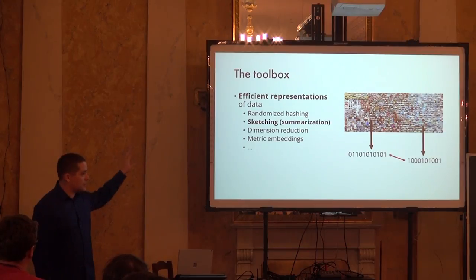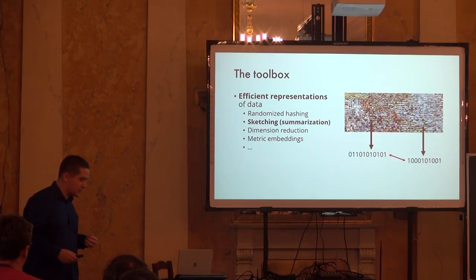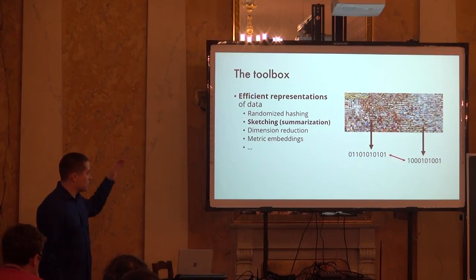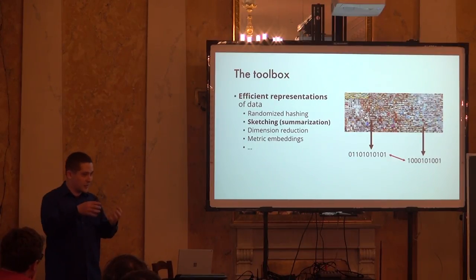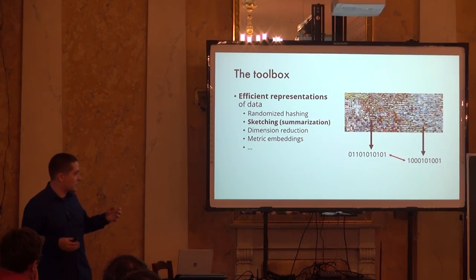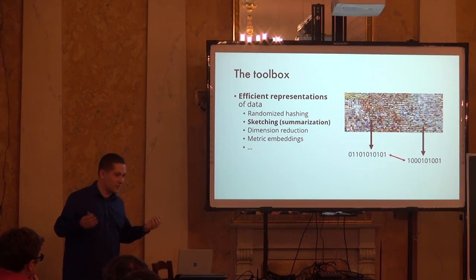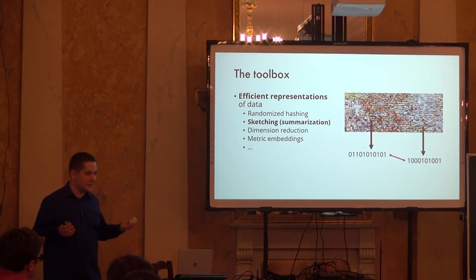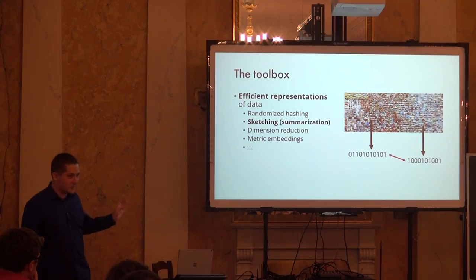The difference between sketching and hashing: at the level I described it, they sound similar. Usually when you think of hashing, you think about exact collisions — when codes exactly collide. Sketching potentially allows more refined estimation procedures: you can compute Hamming distance or something else. It's a technicality, but sometimes an important one. In hashing, we usually care about exact collisions.